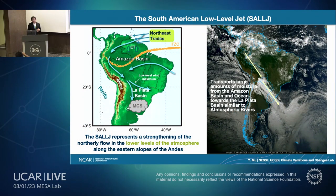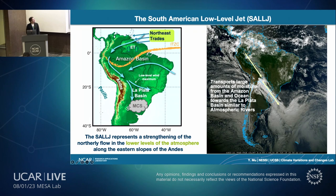First, what is South J, or the full name, the South American Low-Level Jet? Looking at the left figure, here's the South America continent and here's the Andes Mountain, one of the major mountains in the world. We have the northeast trade winds coming from the east towards the Andes Mountain. The Andes can block and deflect this wind, strengthening the northerly flow in the low levels of the atmosphere along the eastern slope of the Andes — we call this the South American Low-Level Jet, or SALLJ.